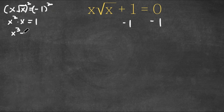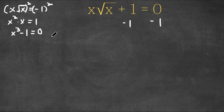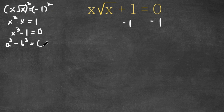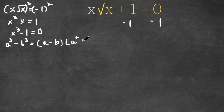Now x squared times x is x to the power of 3. I'm going to move this 1 back, so now we have x to the power of 3 minus 1 is equal to 0. If we have something in the form a cubed minus b cubed, this is equal to a minus b times a squared plus ab plus b squared.